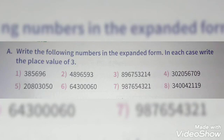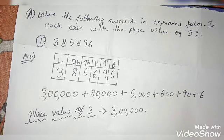Here are a few questions that you need to solve in your maths classwork copy. Write the following numbers in the expanded form. In each case, write the place value of 3. You can see each number given has a 3 in it, so that number's place value you also have to write. I will show you how to solve number 1. From question 2 to question 8, you have to do by yourself in your copy.